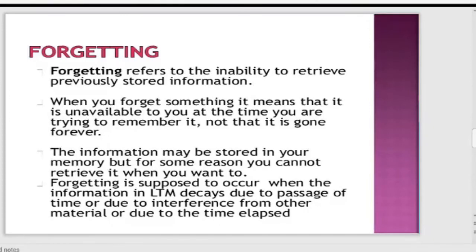When you forget something, it means it is unavailable at that moment — like when in an exam you cannot recall information you studied, but immediately after leaving the hall you remember it. Information may be stored in memory, but for some reason you cannot retrieve it when you want to. Forgetting occurs when information in long-term memory decays due to passage of time or interference from other material.